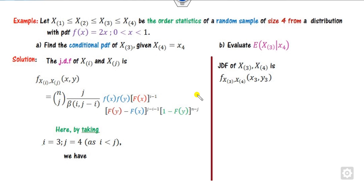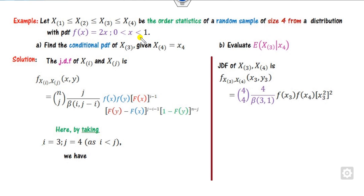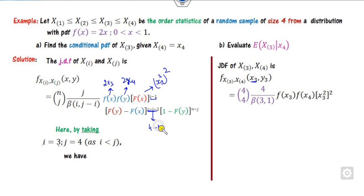Substituting into the formula: n is 4 (sample size), j is 4. We use the beta function with arguments i and j minus i. The PDF is 2x, so at x3 it is 2x3, and at x4 it is 2x4. Since i is 3, i minus 1 is 2, so the CDF at x3 is x3 squared. The exponent j minus i minus 1 equals 4 minus 3 minus 1 equals 0, so that term equals 1. Similarly, n minus j equals 4 minus 4 equals 0, so that term is also 1.